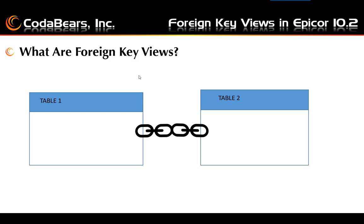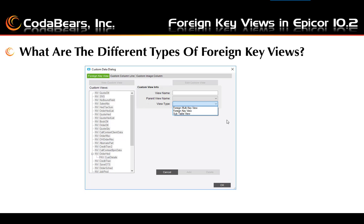A foreign key view is linked to a separate foreign table with similar data to a table used on the current form. To link foreign key fields between these two tables they must share one or more common like property fields. The like property determines which foreign keys can link to other tables. From the drop-down there are three different types: a single key view, which is the standard foreign key view, a subtable view, or a multi-key view.